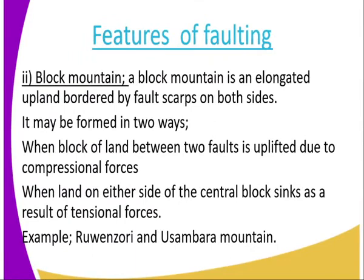We go to the second one, which is the block mountain. A block mountain is an elongated upland bordered by fault scarps on both sides. It is a mountain that is bordered by fault scarps or escarpments. It is formed in two ways: it can be formed when the block laid between two faults is uplifted — uplifting of the central block by compression force — or it can be formed when the blocks on either side of the central block sink as a result of tension force. Examples of block mountains include the Rwenzori and Usambara mountains.